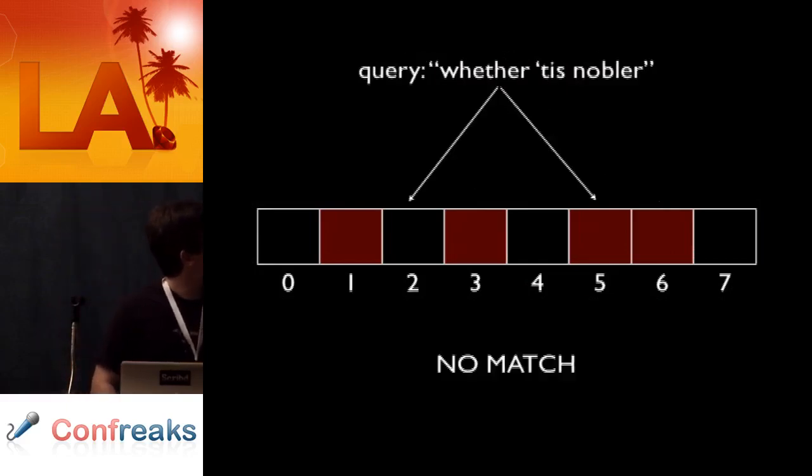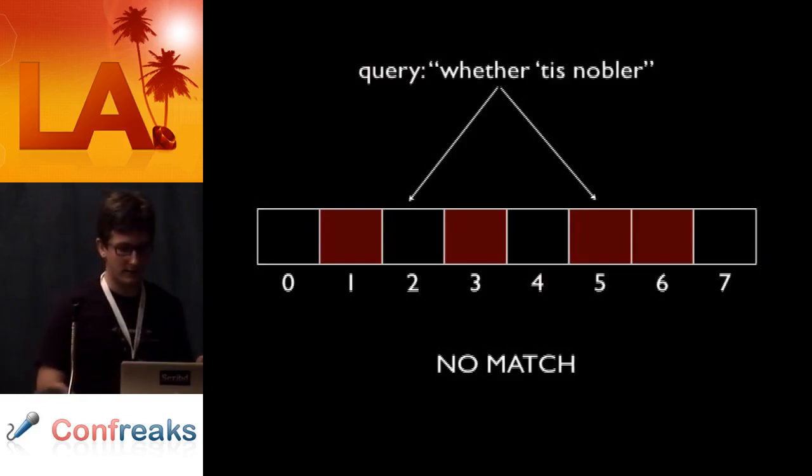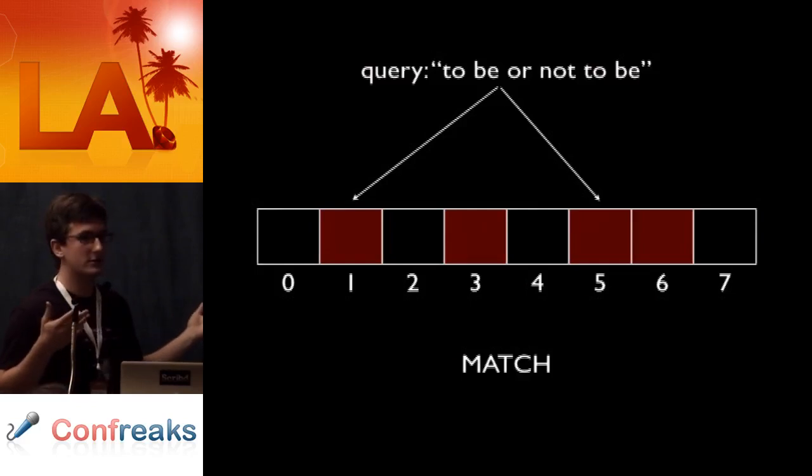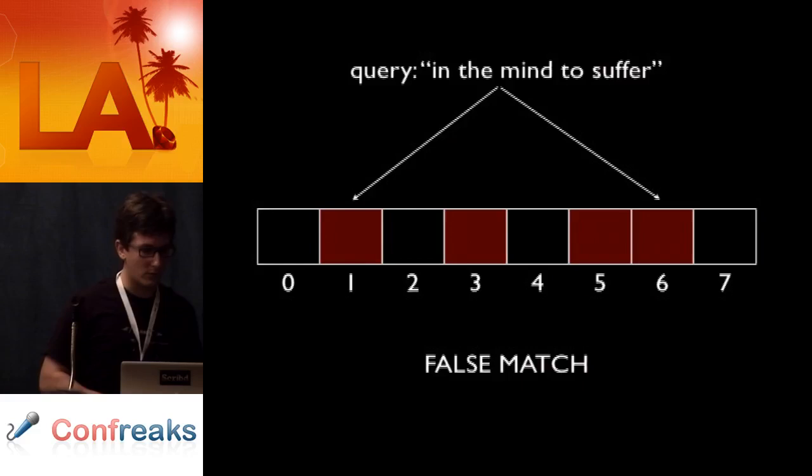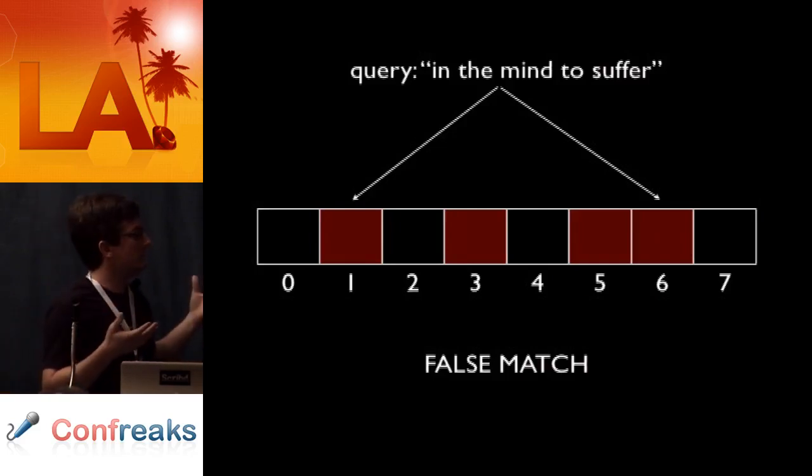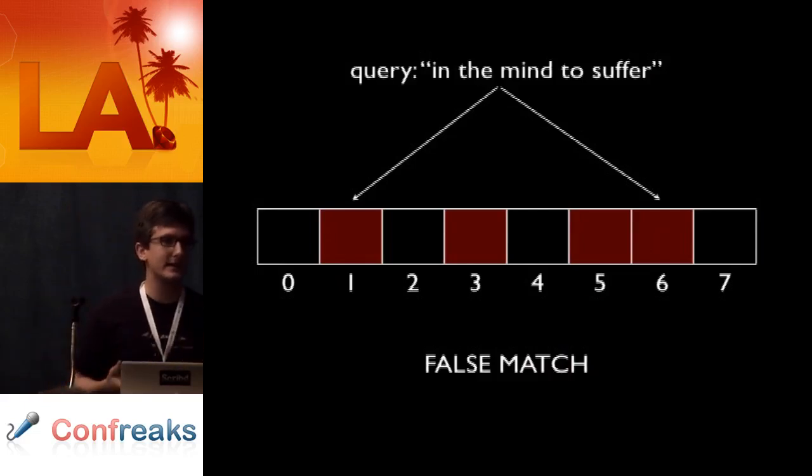So we're going to add that as well. And then we're going to start a query: 'whether it is nobler.' We run that through the same two hash functions, and out pops two numbers, two and five. And one of those is not set, so we definitely have never seen this string before. Likewise, we go back to 'to be or not to be,' run it through two hash functions, one and five, and it's a match. We can also get one that will give a false match. We didn't actually see this one, but the two things that it happened to get just happened to be set. So it's a false match. And this can be tuned just based on the size of the bloom filter. So that is what makes it probabilistic.